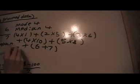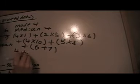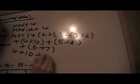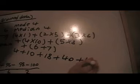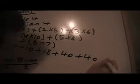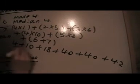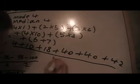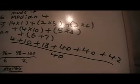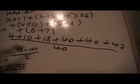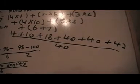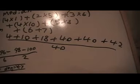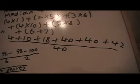So we'll get four plus ten plus eighteen plus forty plus another forty plus forty-two, and divide all that by forty. And we already know how to calculate that bit, we'll just add up all numbers and then divide by forty.